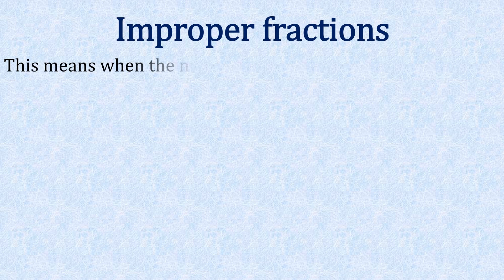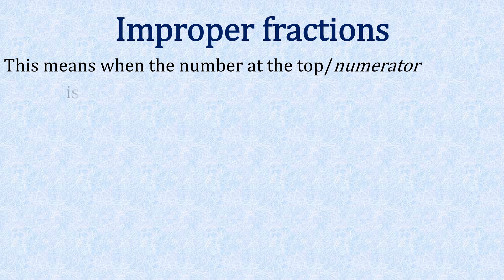Improper fractions. This means when the number at the top, the numerator, is bigger or equal to the bottom number, which we call the denominator.